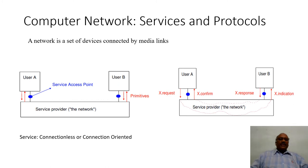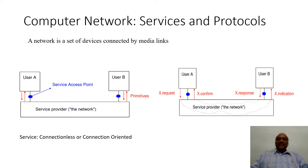A connectionless service between users may lead to unreliable data communication. The process of communication between user A and user B is carried out with the help of rules to be followed in exchanging data. For proper connection establishment or proper data transmission, there are certain primitives such as requests, indications, responses, and confirmations — these service primitives help establish a proper connection for data transmission between two entities.